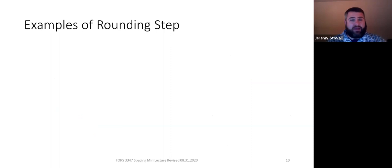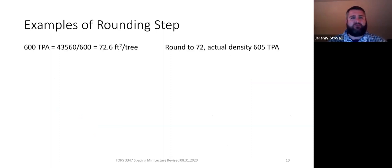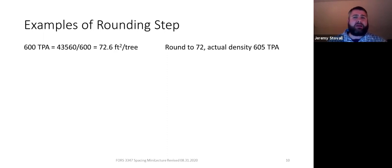In the example of 605 trees per acre, we got exactly 72 square feet, so rounding wasn't needed. But if I wanted 600 trees per acre: 43,560 over 600 gives 72.6 square feet per tree. I could round that to 72. I'm targeting 600 trees per acre but end up with about 605. In operational forestry, being within 5 trees per acre is great — that's a very minor difference in the real world.